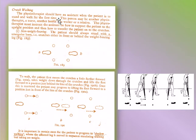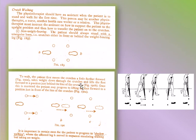The physiotherapist should have an assistant when the patient stands and walks for the first time. For non-weight bearing, the patient should always stand with a triangular base, crutches either in front of or behind the weight-bearing leg. The patient first moves the crutches forward, takes weight through the crutches, and lifts the foot forward to a position just behind the line of the crutches. Once mastered, the patient may progress to lifting the foot forward just in front of the crutches. In certain cases, the patient progresses to shadow walking where the affected leg is moved in sequence simultaneously but takes no weight.